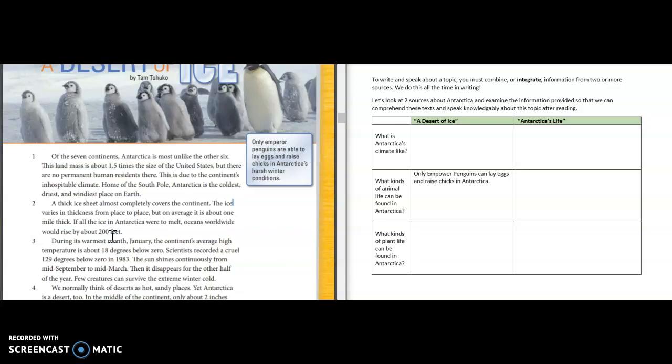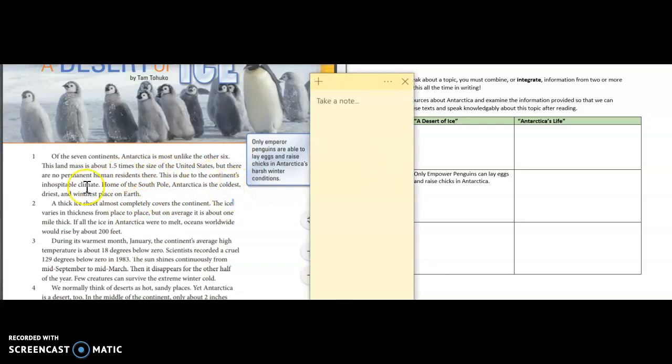Home of the South Pole, Antarctica is the coldest, driest, and windiest place on Earth. Well if we're talking about a place that is the coldest, the driest, and the windiest, and we're saying that no human residents can live there because of the inhospitable climate, I'm going to assume that inhospitable must mean that it's not very pleasant. So I'm going to write here paragraph one, and I'm just going to write a quick note what this was about. Has, let's say, rough/harsh climate. I also learned there's no residence, meaning nobody lives there.